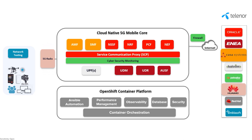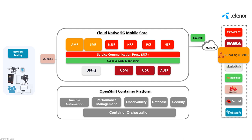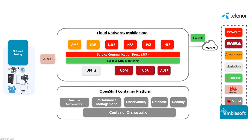When it comes to end-to-end automation, we are leveraging Red Hat's Ansible automation platform, while Emblasoft provides automated network load and integration test capabilities.